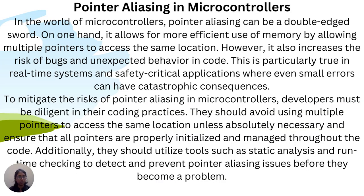Pointer Aliasing in Microcontrollers. In the world of microcontrollers, pointer aliasing can be a double-edged sword. On one hand, it allows for more efficient use of memory by allowing multiple pointers to access the same location. However, it also increases the risk of bugs and unexpected behavior in code. This is particularly true in real-time systems and safety-critical applications where even small errors can have catastrophic consequences. To mitigate the risk, developers should avoid using multiple pointers to access the same location unless absolutely necessary, ensure all pointers are properly initialized and managed, and utilize tools such as static analysis and runtime checking to detect and prevent pointer aliasing issues.